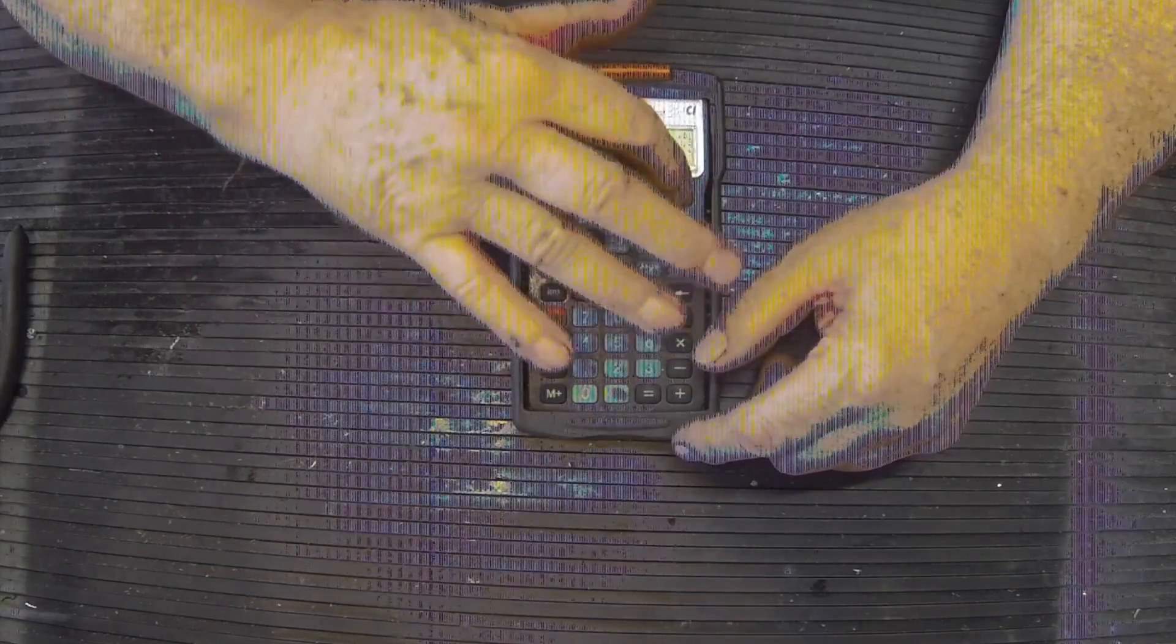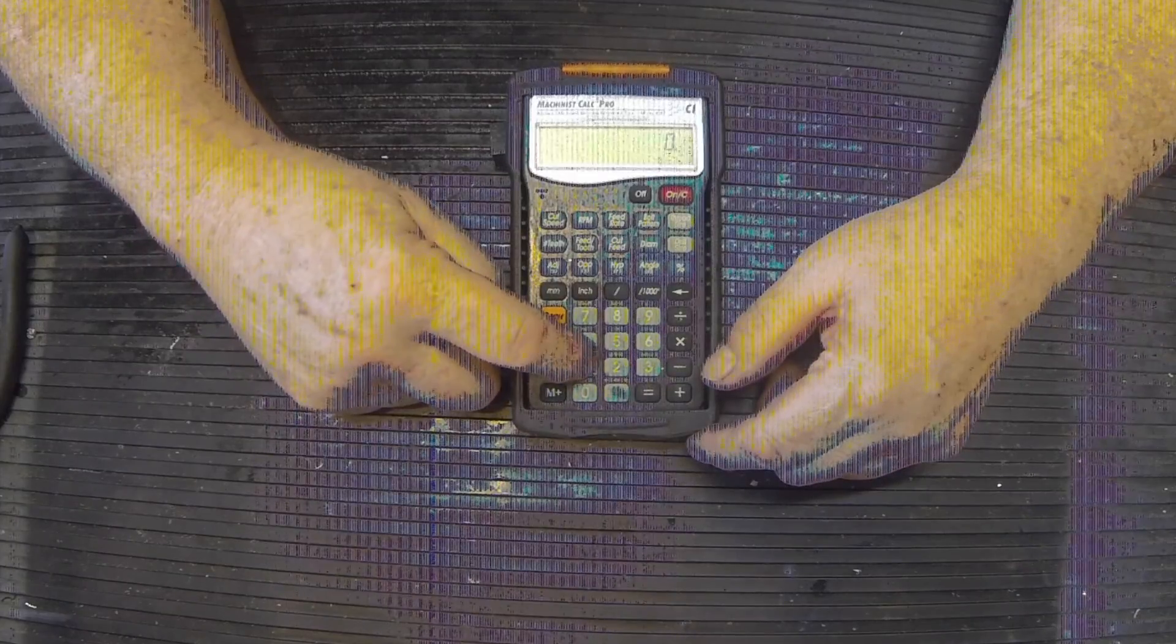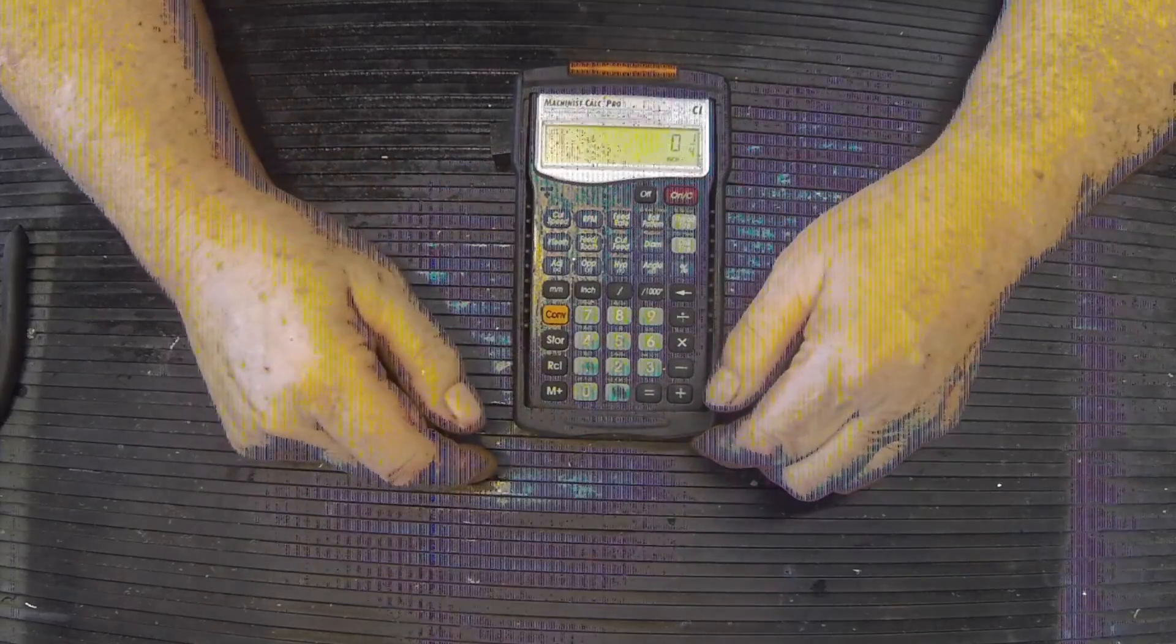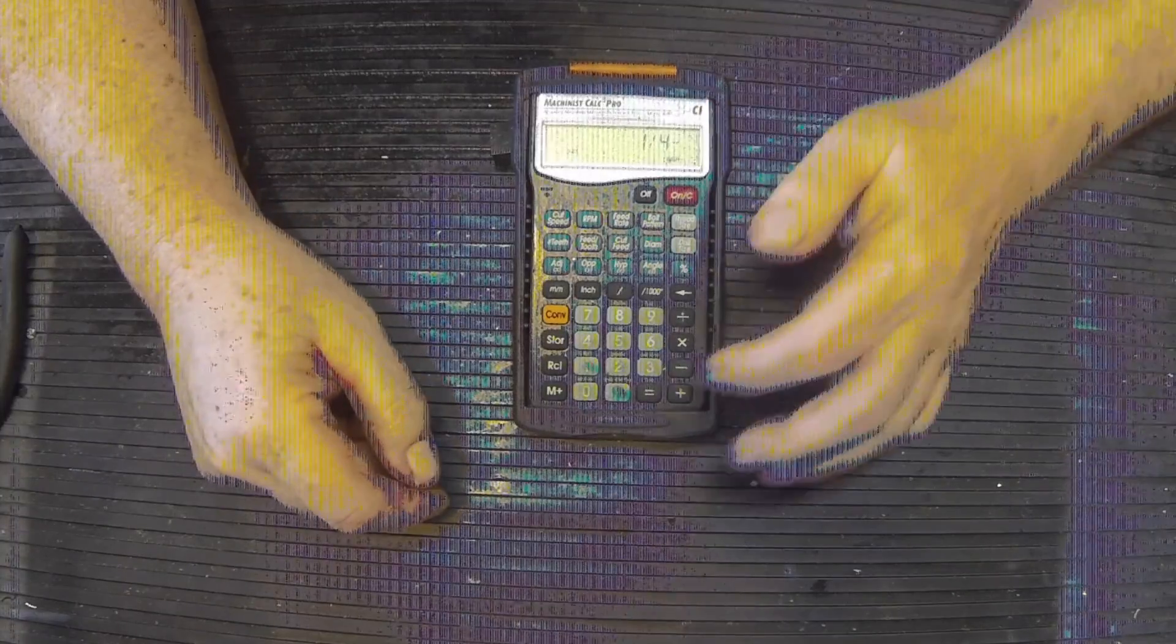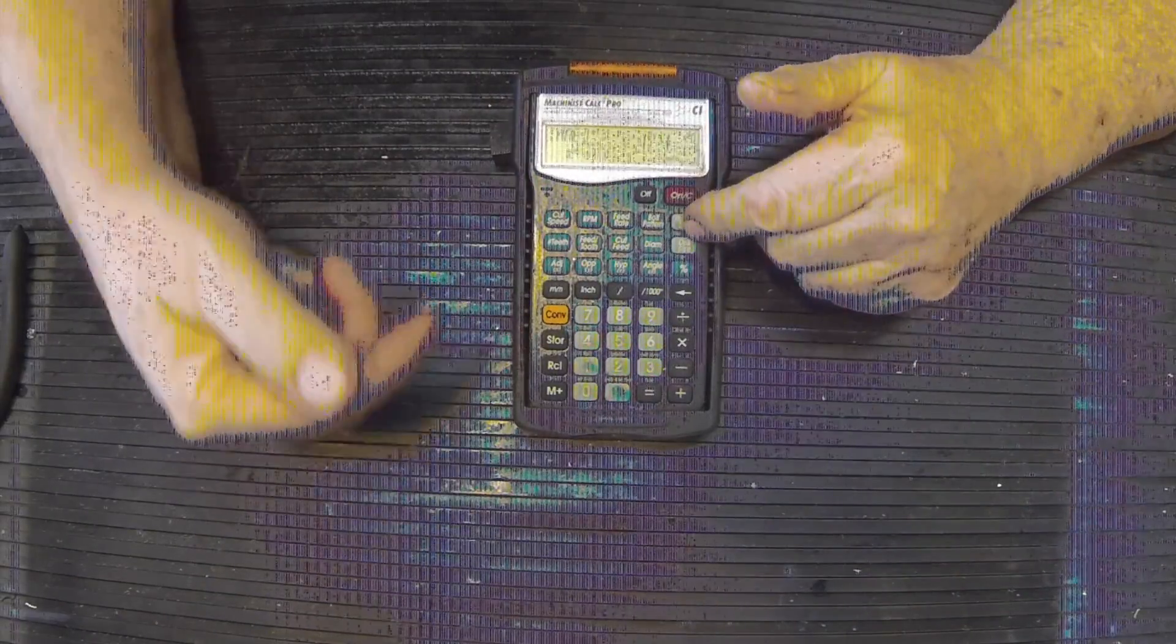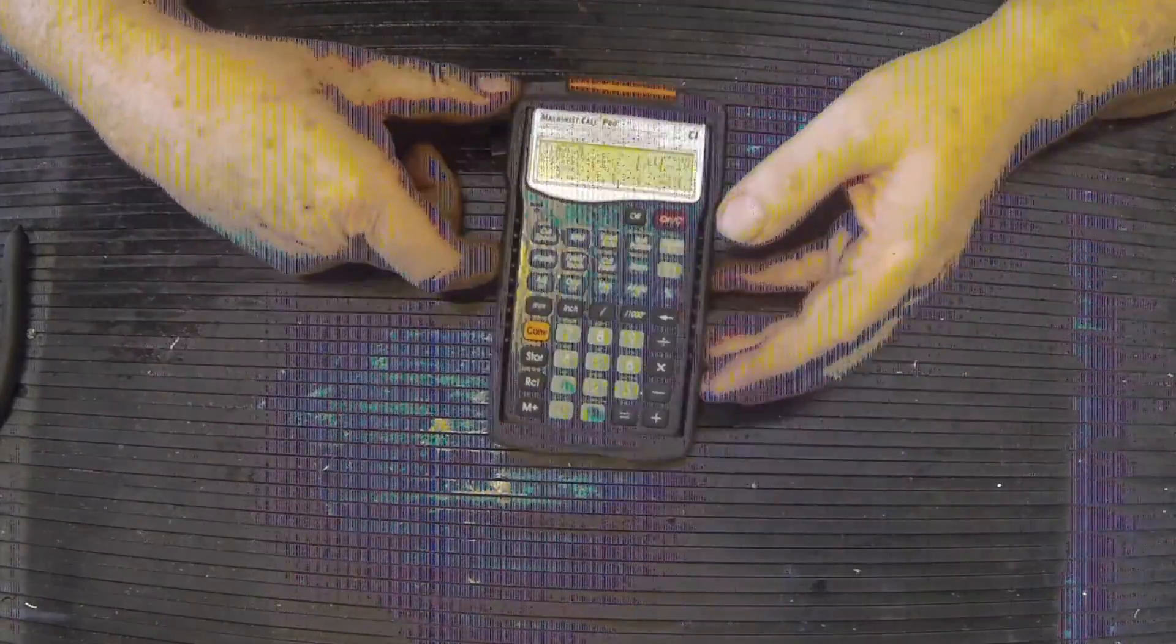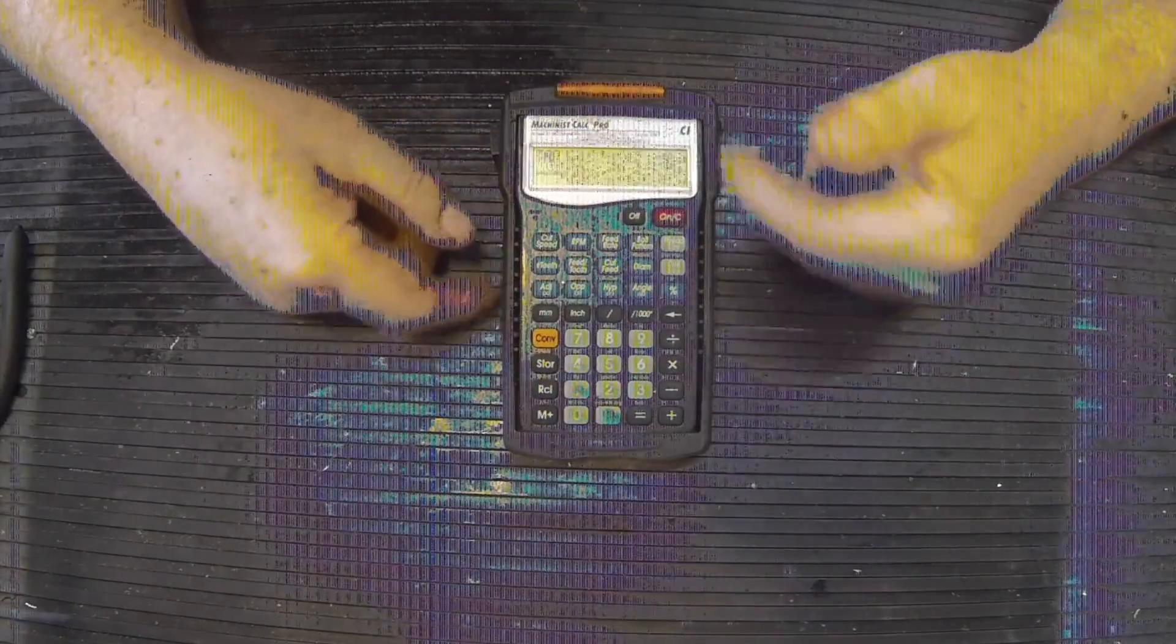We turn it on and we say we want a one quarter. We'll go up here and say thread size and say 20. To zero. And it gives us the reading - upside down, that's the thread quarter 20.